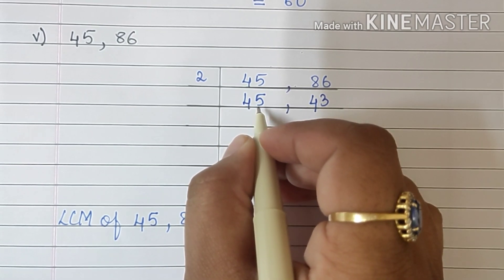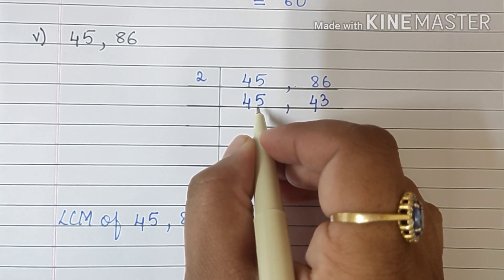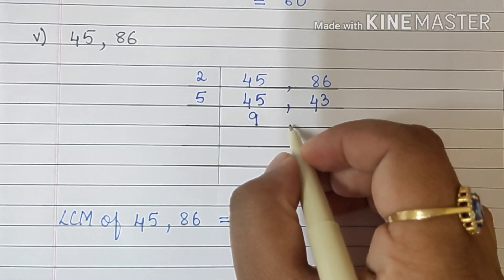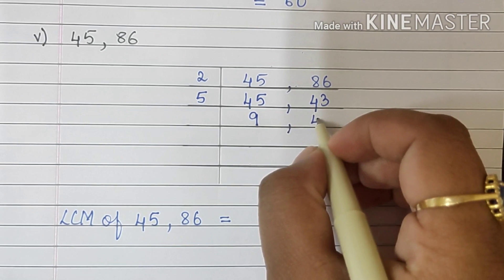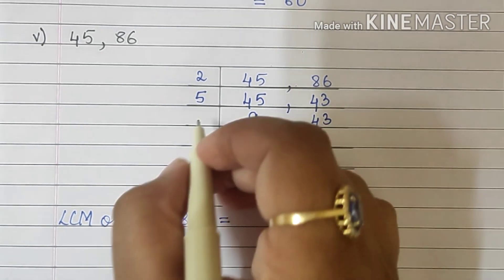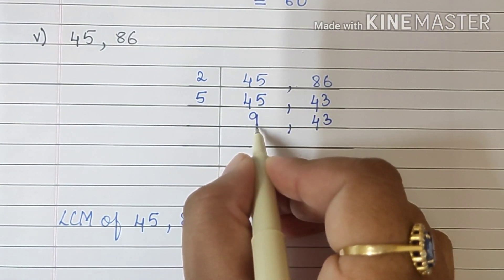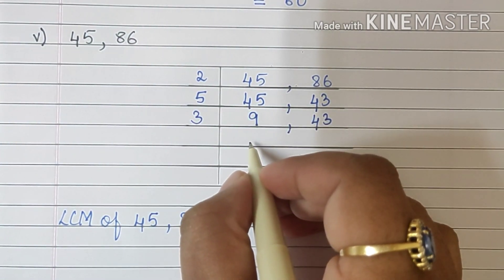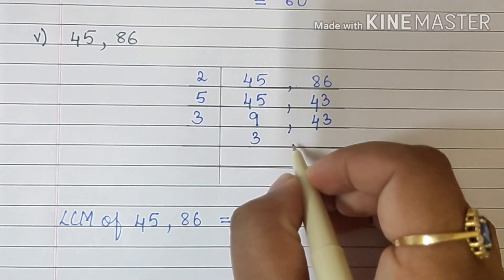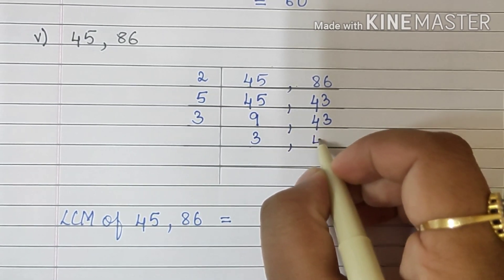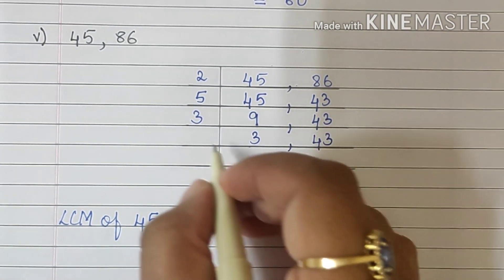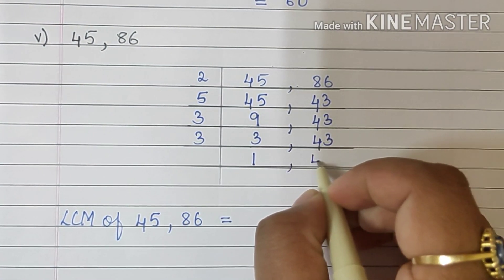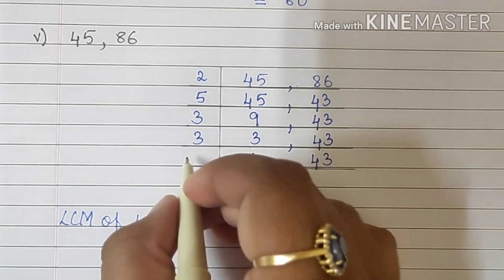Since this is 45 we will go with 5. 5 nines — this is not divisible by 5. We'll write it. Then this goes in the 3 times table, so we'll write here 3. 3 3s are 9, and 43 will come down as it is. 3 ones are 3, so 43.